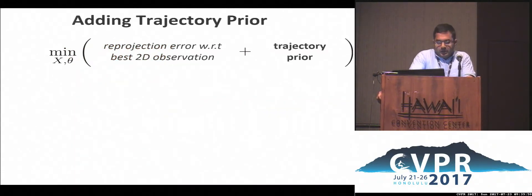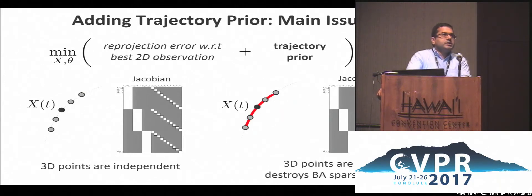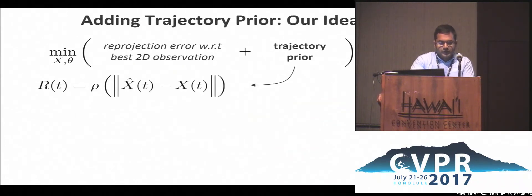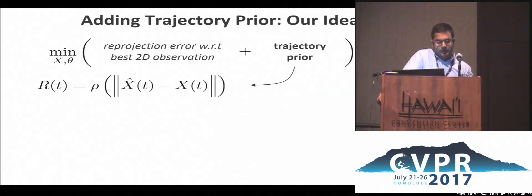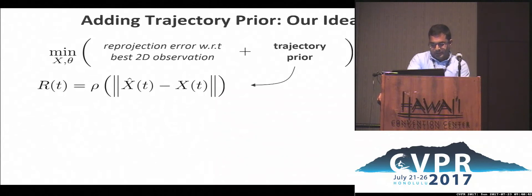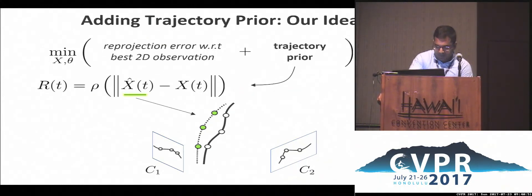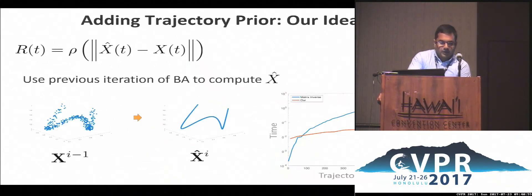The second idea is introducing a trajectory prior into the objective. Compared to standard bundle adjustment where points are treated independently, when you introduce trajectory priors, you couple the 3D points and it destroys the sparsity structure that makes bundle adjustment scale to large problems. To deal with this, we tried a different approach: generating a proposal trajectory, denoted X-hat, and encouraging our estimated 3D points to lie close to this proposal trajectory. This is a soft constraint, and when you do this optimization, your bundle adjustment scales to large problems — long trajectories.